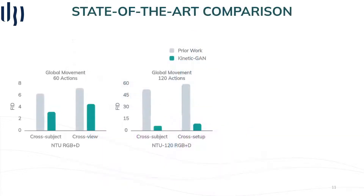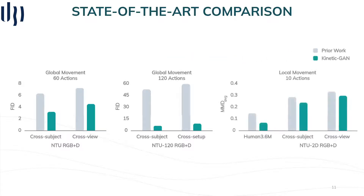Our quantitative results show that KineticGAN achieves state-of-the-art performance while synthesizing far more different actions. And as mentioned before, previous works are more focused on local body movement, so we also trained and tested our methods under the same settings, where we significantly outperform the best methods in all datasets.